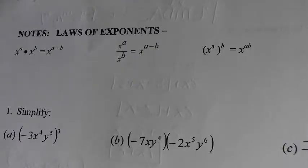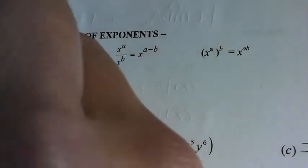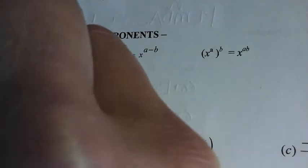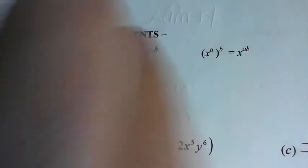When that base is a letter, a variable, we do okay with this rule. For instance, if it's x to the third times x to the second, we're pretty good with x to the fifth.